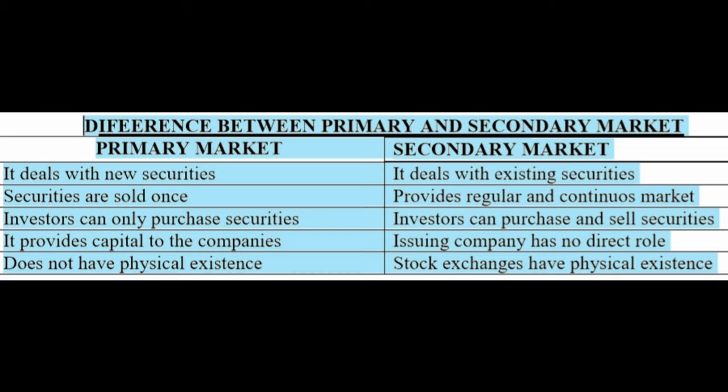The next point: the primary market provides capital to the company, but the issuing company has no direct role in the secondary market. Finally, primary market has no physical existence, whereas the secondary market has physical existence in the form of stock exchange.